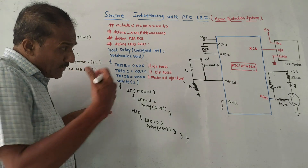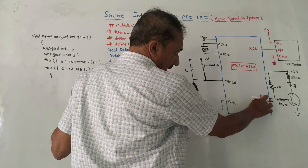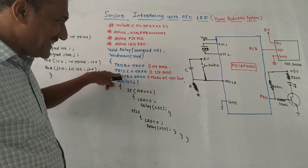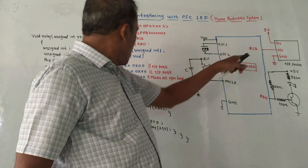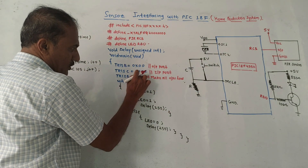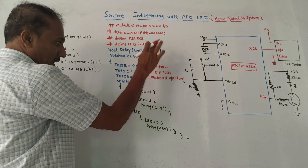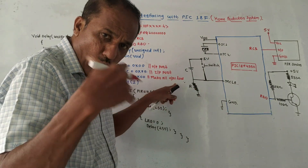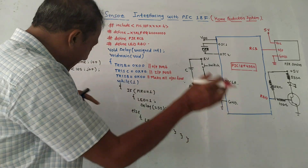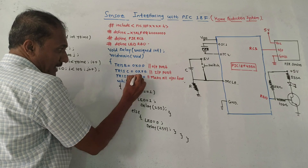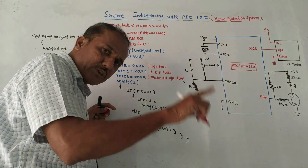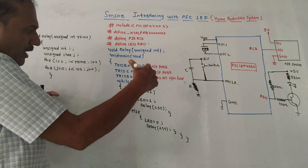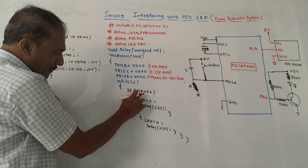Port RB0 is acting as an output port, so TRISB is set to 0x00. Port C is acting as an input port, so TRISC is set to 0xFF. After that, all outputs are made low, so we give the command LATB equals 0x00 to make all outputs of that port low. Then we enter the while(1) infinite loop.